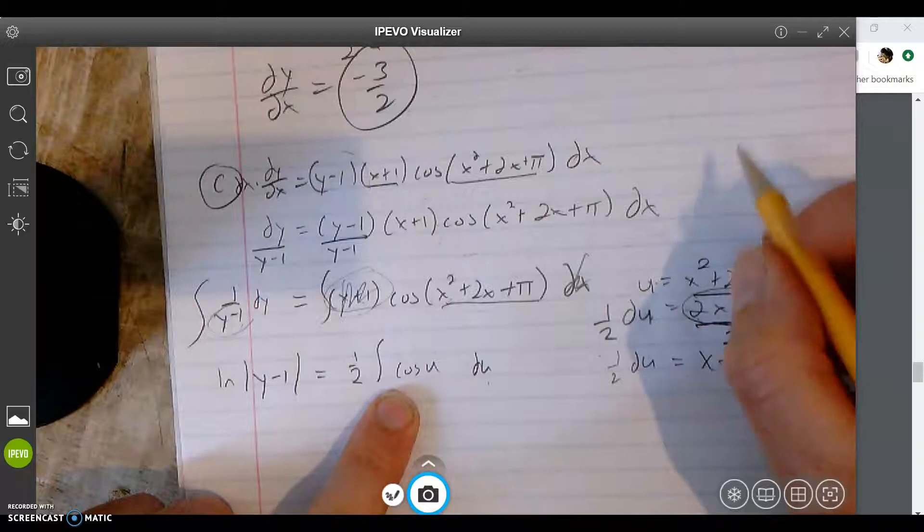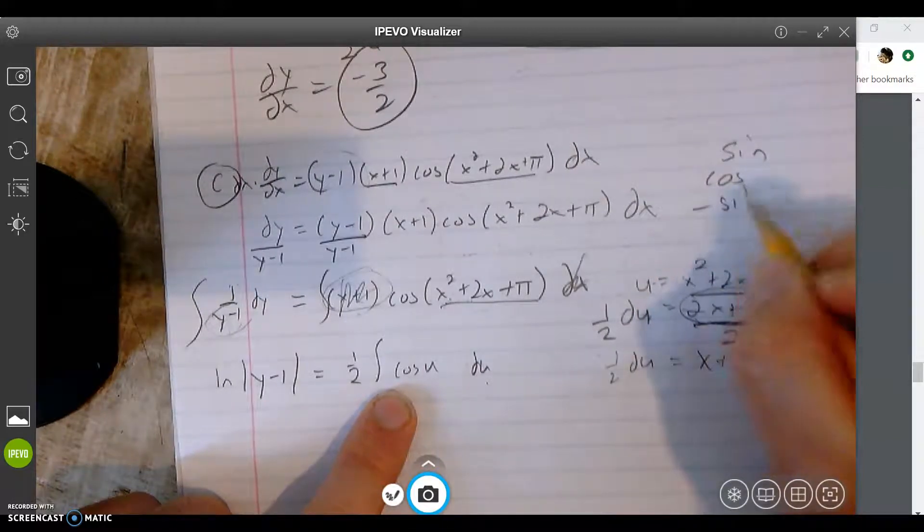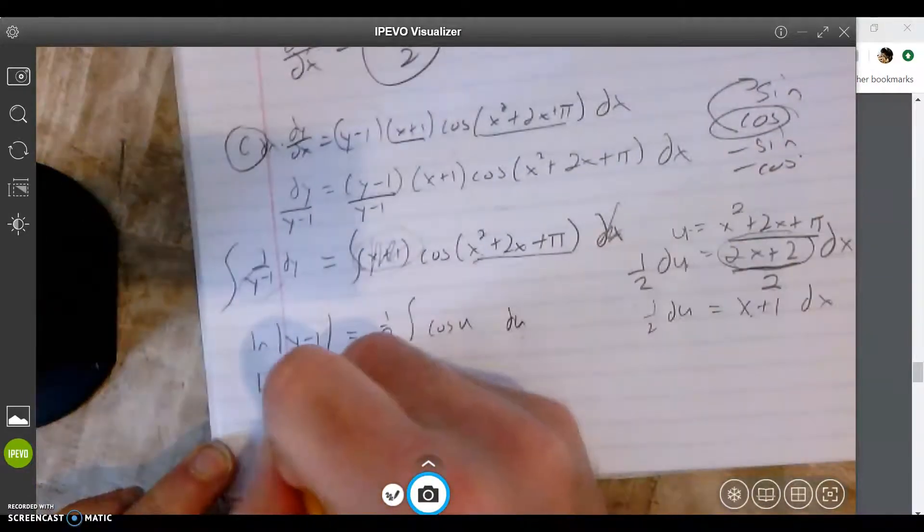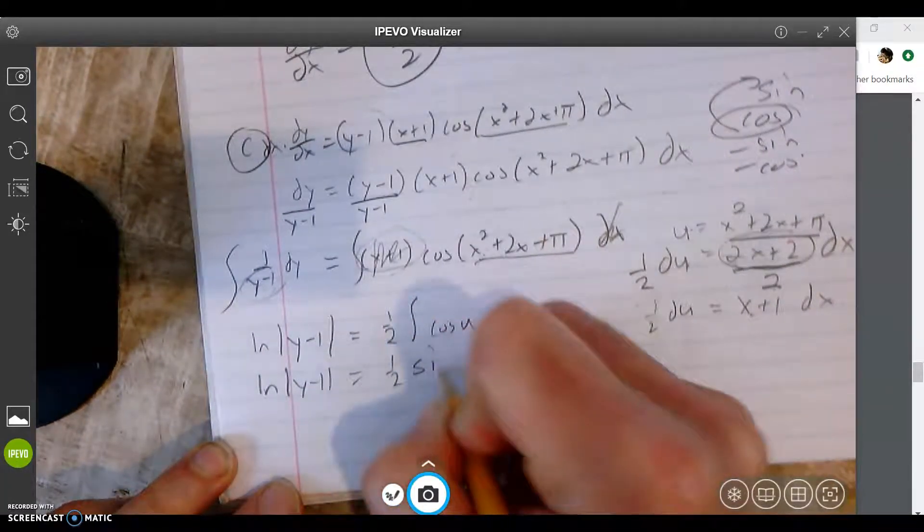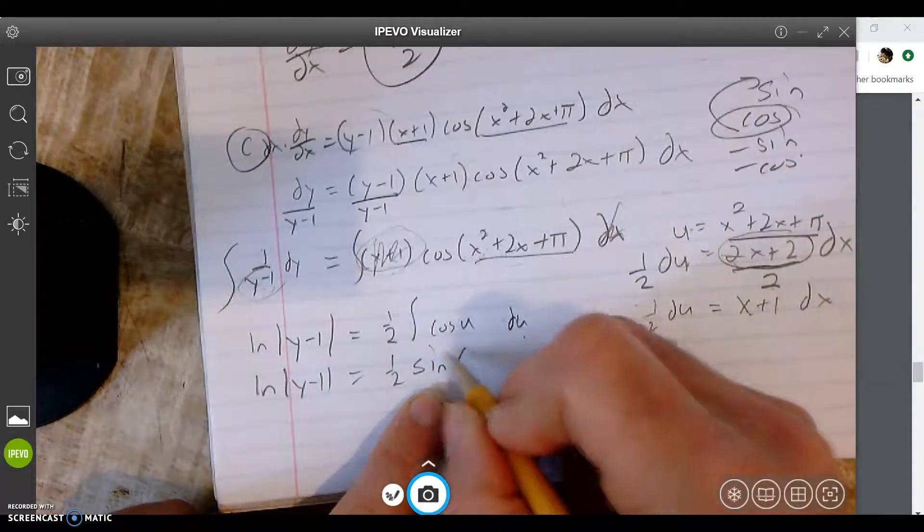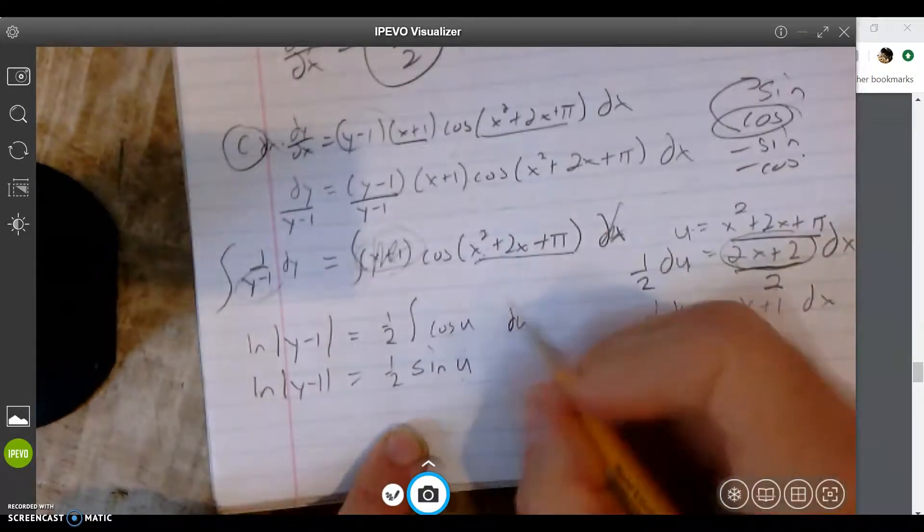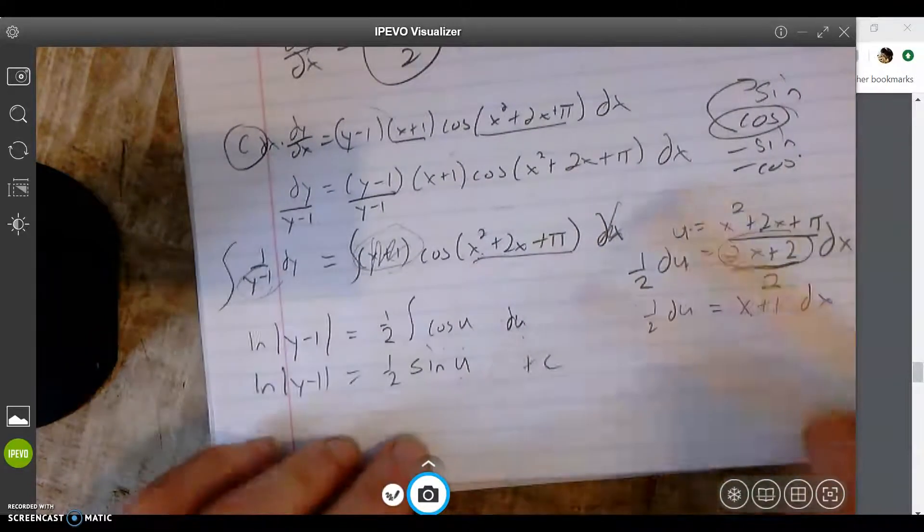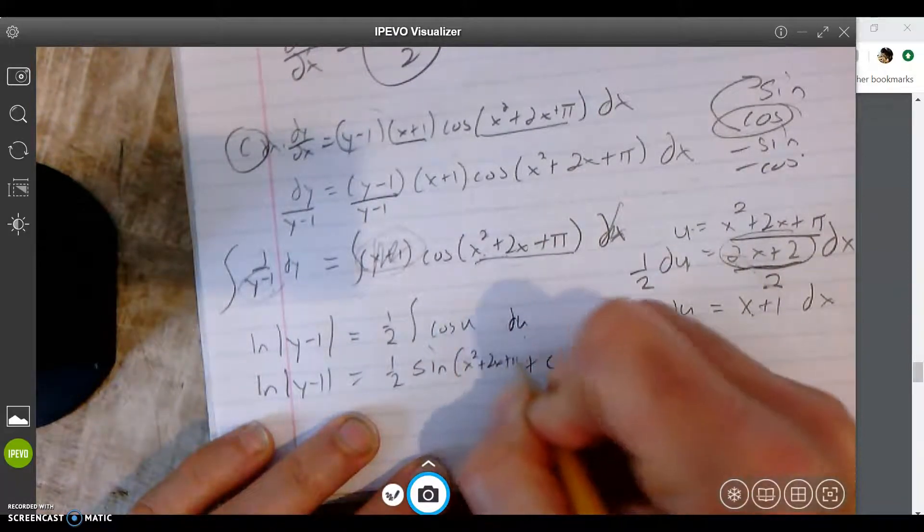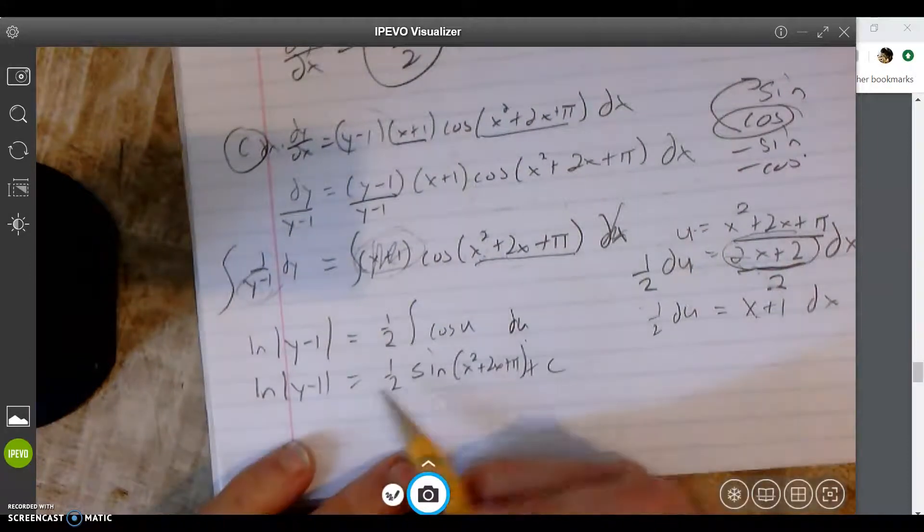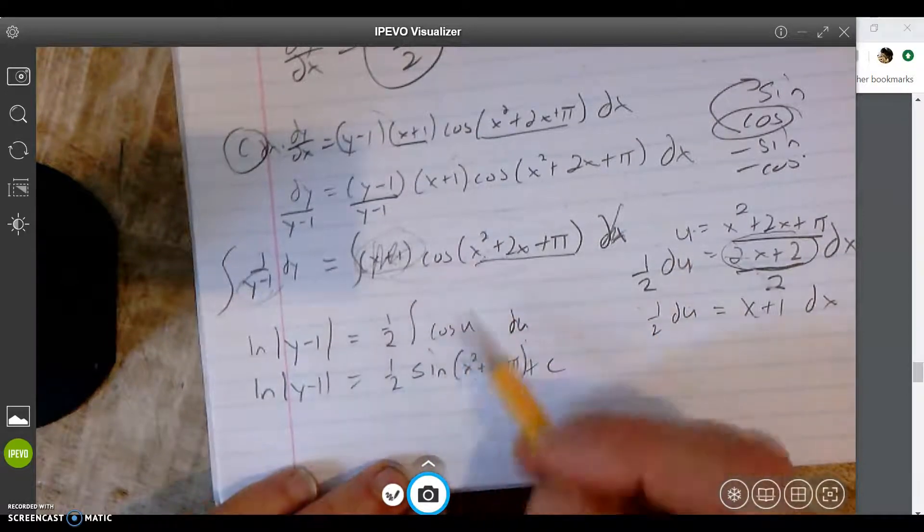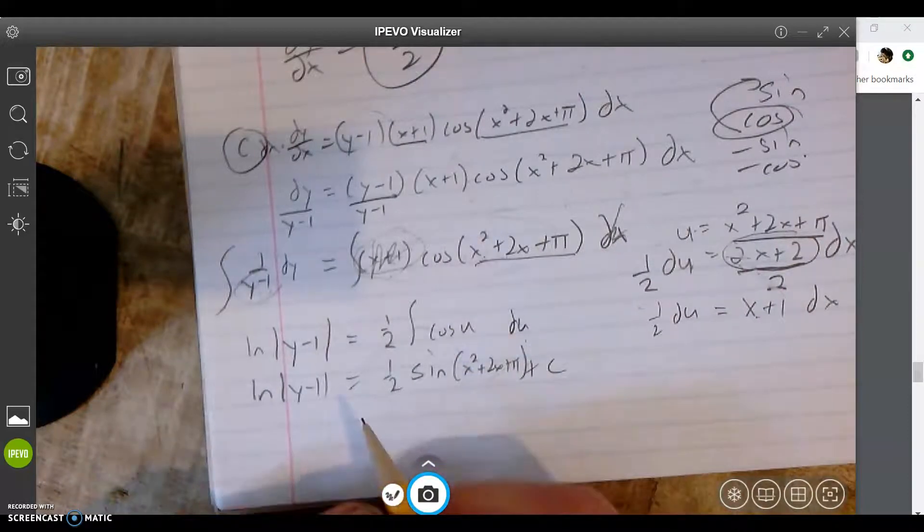What's the anti-derivative now of cosine? Sine, cosine, negative sine, negative cosine. Anti-derivative of cosine is sine. So ln|y-1| = (1/2)sin(u) + c. But rather than put u right here and do another step, I'm just going to substitute right in and get right to my problem. It's x²+2x+π. Bam. And that is the correct anti-derivative of this. If you were to do the chain rule, you'd get this right here. You can always double-check by doing the chain rule here and then getting this back.